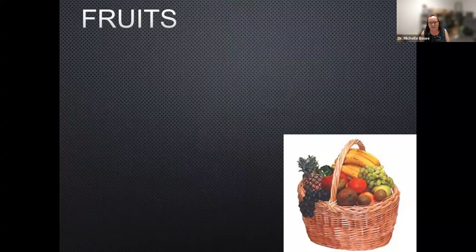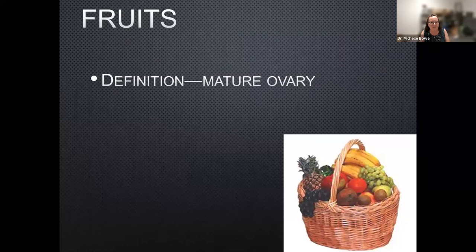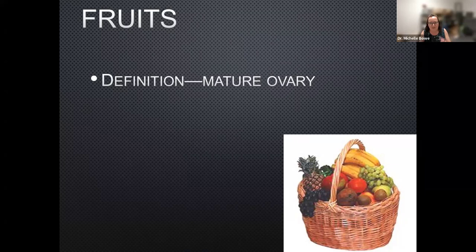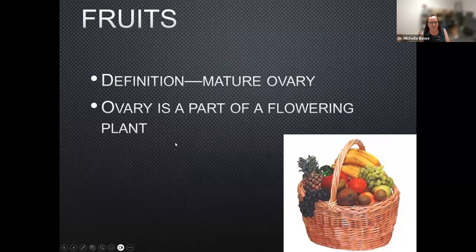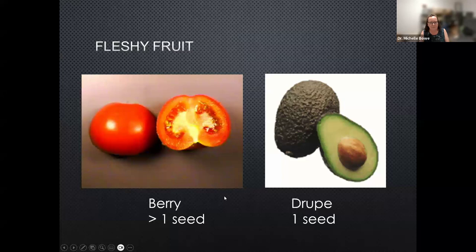Once your flower has matured, it becomes what's called a fruit. A fruit is simply a mature ovary. Only flowering plants have fruit — things that have cones are not considered fruit. So a juniper, even though we sometimes call its structures berries, they're not technically fruit and not technically berries. The mature ovary of the flowering plant group is the fruit.